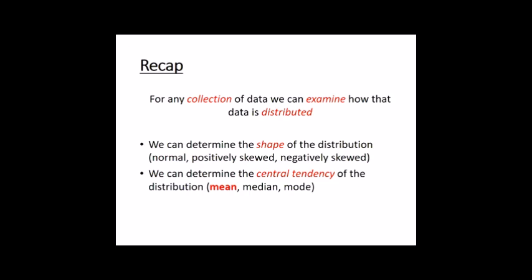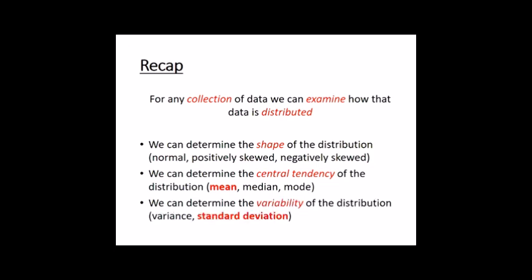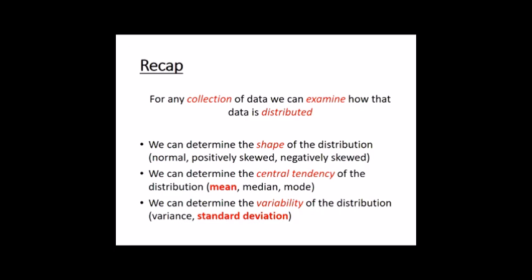We're interested in central tendency — we can take the mean, median and mode, but typically for quantitative analysis we're interested in the mean. We're also interested in the variability within that distribution: is it a wide distribution with scores all over the place, or fairly narrow? We can get variance, and if we take the square root of that we get something more intuitive — the standard deviation.